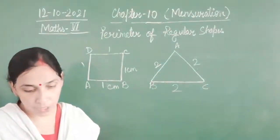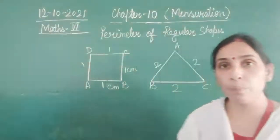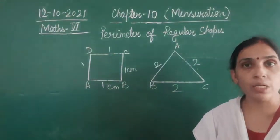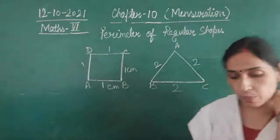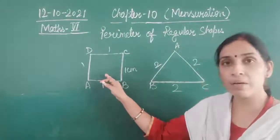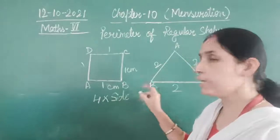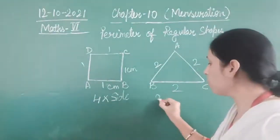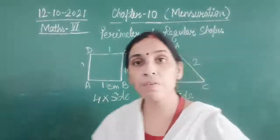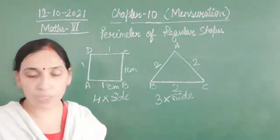Perimeter of regular shapes — whenever we talk about a regular shape, it means the shape is two-dimensional and all its sides are equal. From this we can conclude the formula. For a square we have four sides, so the formula will become 4 into side. For an equilateral triangle we have three sides, so the formula for perimeter will become 3 into side. If you have a hexagon, that will be 6 into side. Easy way to find the formula.